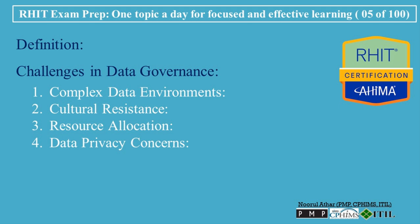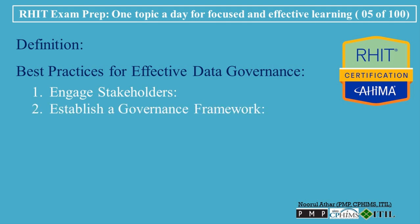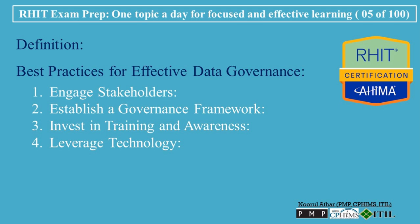Best Practices for Effective Data Governance: 1. Engage Stakeholders — involve key stakeholders from various departments in the data governance process to gain buy-in and ensure that governance practices meet organizational needs. 2. Establish a Governance Framework — develop a clear framework that outlines roles, responsibilities, processes, and standards related to data governance. 3. Invest in Training and Awareness — provide training to staff on data governance principles, policies, and best practices to foster a culture of accountability and stewardship. 4. Leverage Technology — utilize data governance tools and technologies to automate processes, monitor compliance, and enhance data quality.